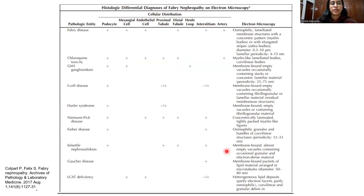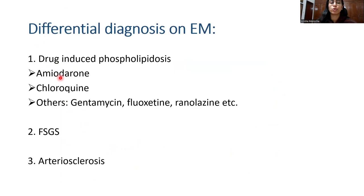This is an exhaustive list of the differential diagnoses of Fabry's disease. To cut it short, the most important one is drugs — amiodarone and chloroquine are the most commonly implicated ones. It is important to elicit a history of these drugs before giving a diagnosis of Fabry's disease.